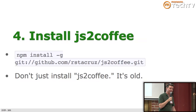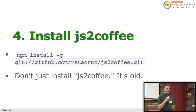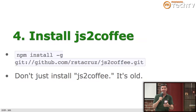I tweeted the js2coffee developer last night — he's in the Philippines — and asked if he could update the Node package manager with the current version. He tweeted me back about 30 minutes ago and said yeah, okay, he's on his way to work. So maybe by the time this talk is done you can just do npm install js2coffee. But if you do it straight from GitHub, you will get the newest version.